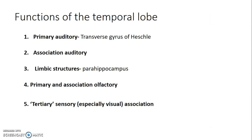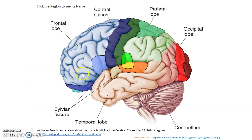The functions of the temporal lobe include: the primary auditory center at the transverse gyri of Heschl on the superior temporal gyrus, with the remaining cortex forming the auditory association area. The parahippocampal gyrus is a component of the limbic system. We also have the olfactory and association olfactory cortex within the temporal lobe, with the uncus and parahippocampus involved. There is also tertiary sensory association, especially for visual processing.